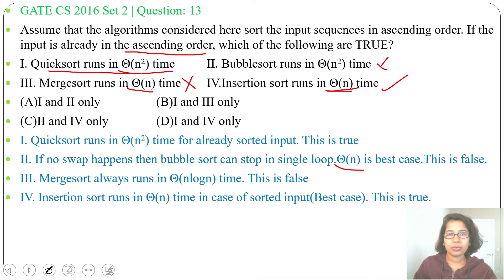This is Theta of n². We found statement 1 is true and statement 4 is true, while statements 2 and 3 are wrong.